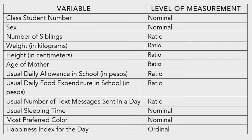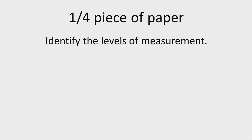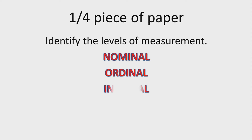For all viewers of the Statistics and Probability playlist, as you may notice, I've been using the same examples for you to better understand the types of variables we've been explaining, from lesson number two up to this lesson. Get a one-fourth piece of paper, a scratch paper, or if you're confident with your answers, you can answer through the comments section below. Identify the levels of measurement by writing nominal, ordinal, interval, or ratio.